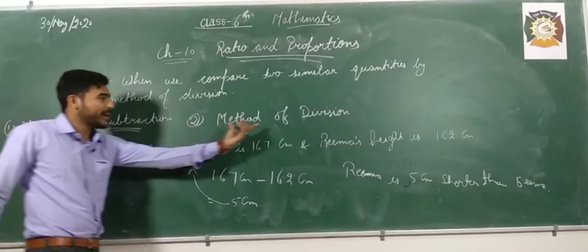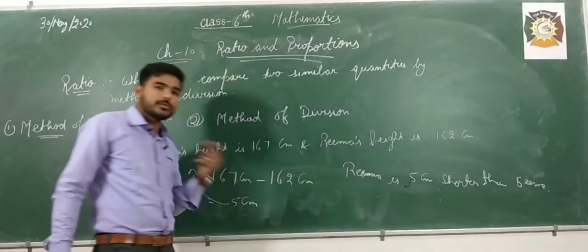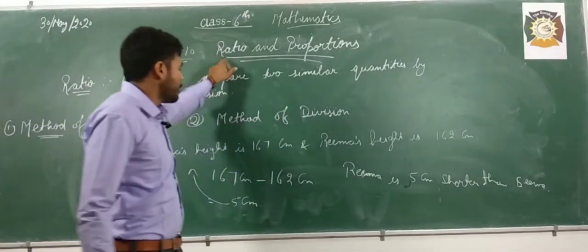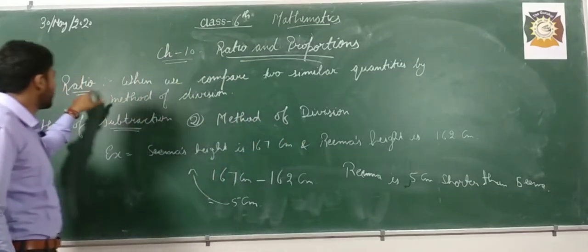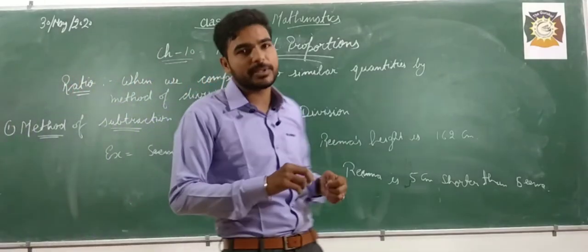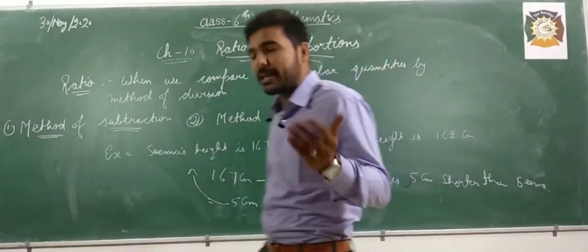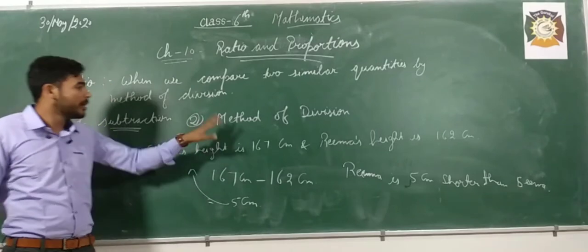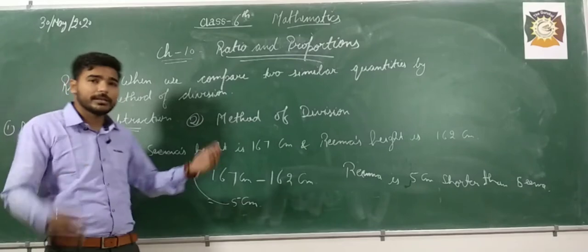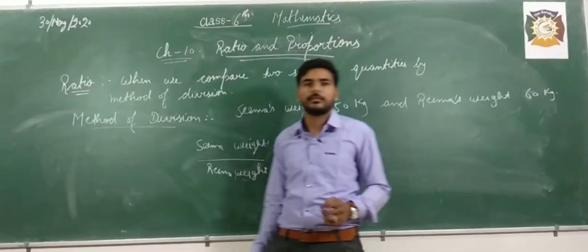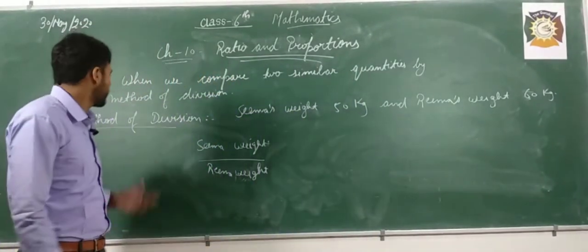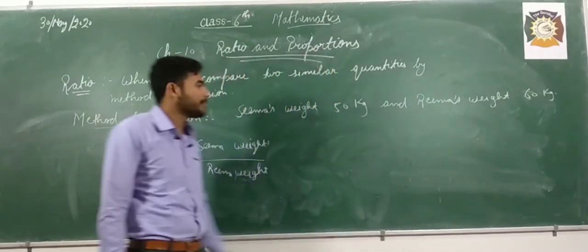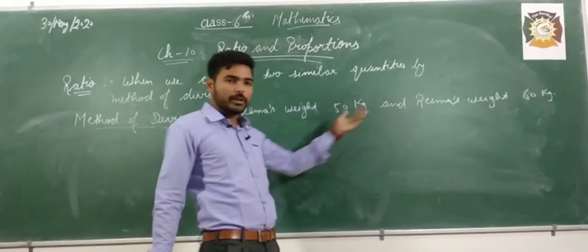Now we have another method through which we can compare two similar items — that is the method of division. The second method is the method of division. We take one example: Sima's weight is 50 kg and Reema's weight is 60 kg. Now we are comparing the weight of both with the help of the method of division.